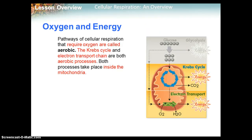Pathways of cellular respiration that require oxygen are called aerobic — think aerobic exercise. The Krebs cycle and the electron transport chain, the two other parts of cellular respiration, are both aerobic processes. They both need oxygen to happen, and both processes happen inside the mitochondria.